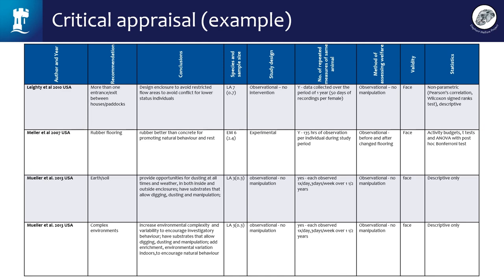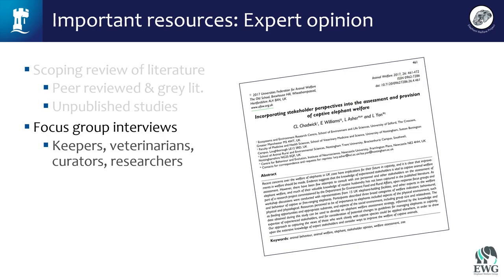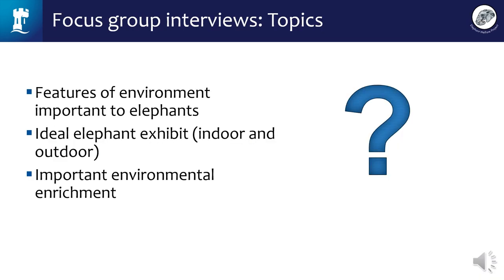We investigated evidence of physical and social resources important to elephants, looking at the strength of evidence for each resource. We undertook a scoping review of peer-reviewed publications, non-peer-reviewed grey literature such as keeper journals, and unpublished work including reports from undergraduate and postgraduate research projects at zoos. We then undertook a critical appraisal evaluating sample population, study design, reliability and validity, sampling technique, welfare assessment methods, statistical methods, and recommendations from each study.